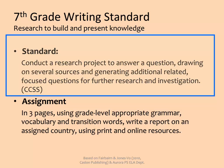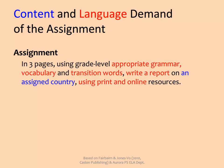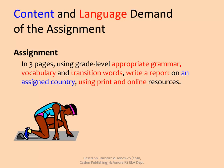This state standard for seventh grade writing says that students should be able to conduct research and answer questions, drawing on several sources, and also generate additional questions. To address parts of this standard, the teacher has made the following assignment: in three pages, use grade-level appropriate grammar, vocabulary, and transition words to write a report on an assigned country using print and online resources. The standards-based content of this assignment is highlighted in blue — knowledge about an assigned country. The language demand of this assignment is highlighted in red — students must use appropriate grammar, vocabulary, and transition words to write a three-page report, and must use print and online resources to find information. This is the starting place for thinking about differentiation.